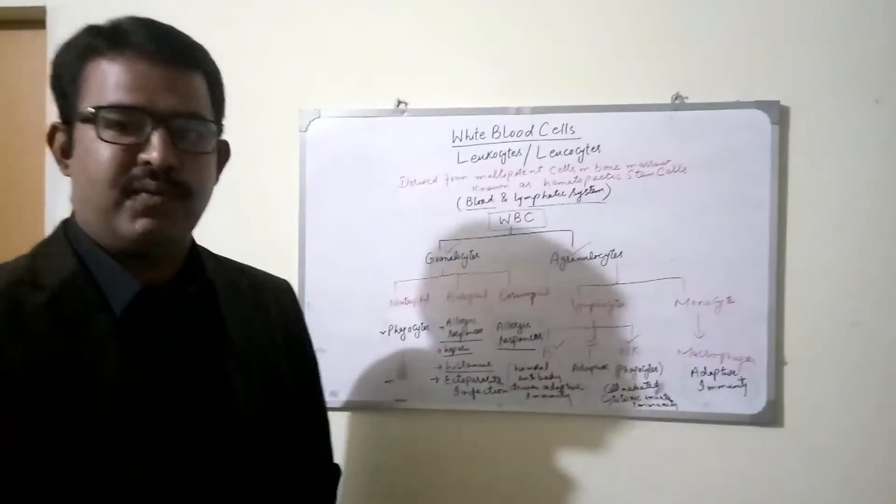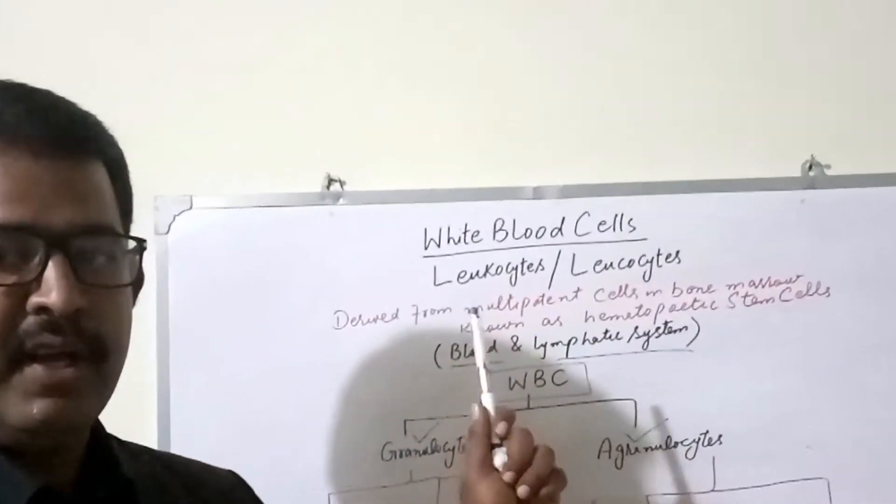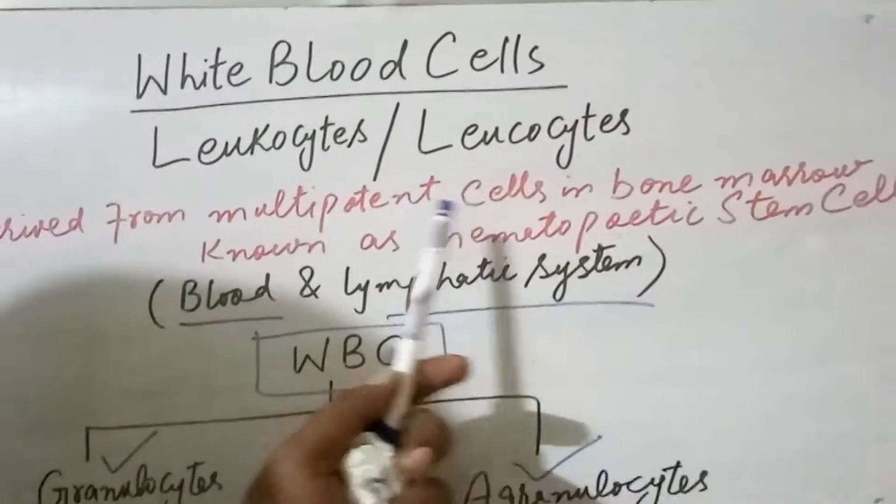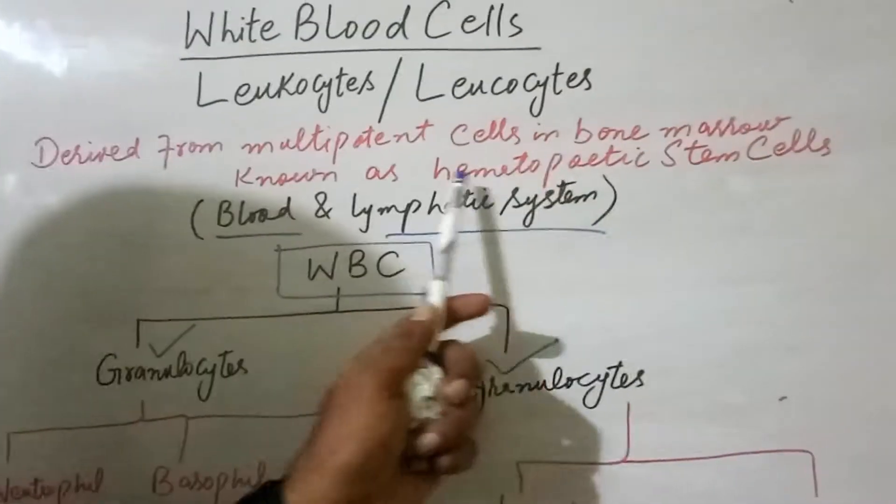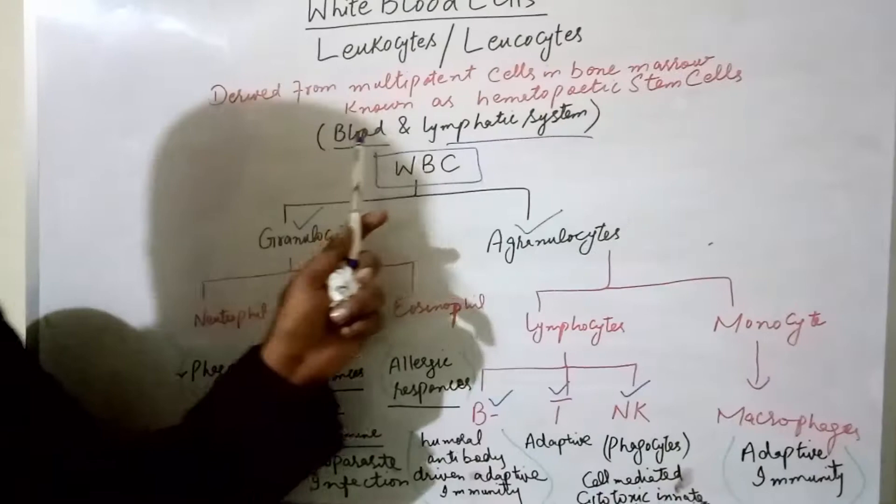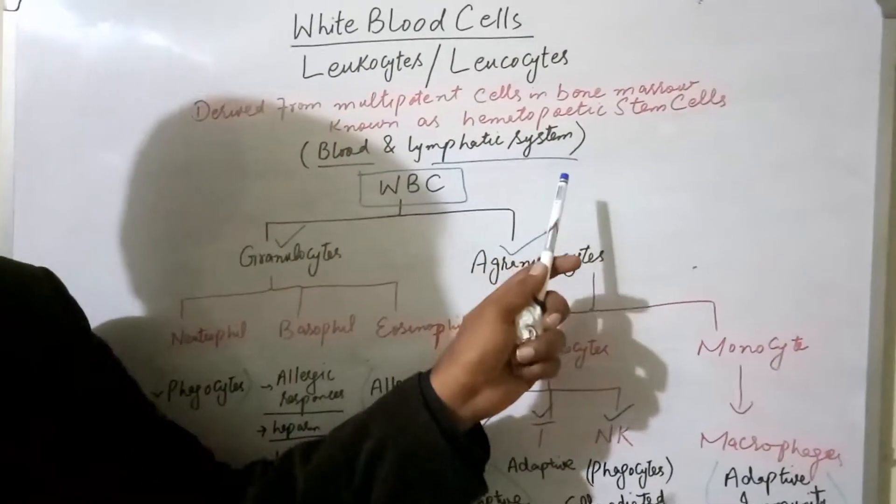Hi guys, in today's lecture we will study about the white blood cells. White blood cells are also called leukocytes. White blood cells are derived from the multipotent cells in the bone marrow known as hematopoietic stem cells. White blood cells are present at two places in the blood and in the lymphatic system.